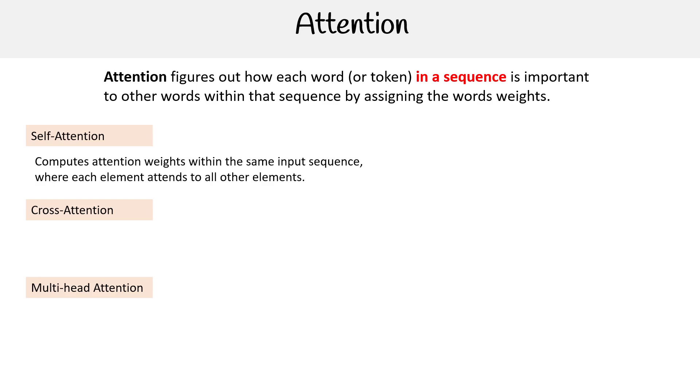Self-attention computes attention weights within the same input sequence where each element attends to all other elements. When you see this, it basically means that as attention happens, it keeps feeding itself right back into itself, the same sequence. So using transformers to model relationships and sequences, words in a sequence.